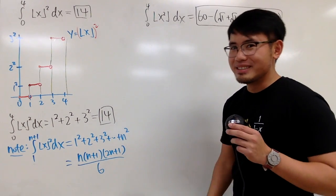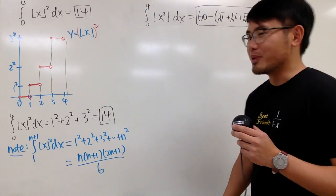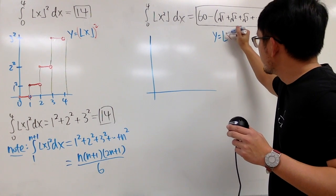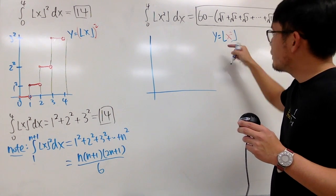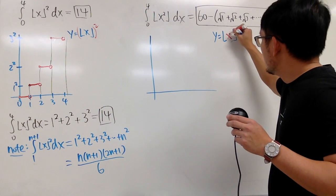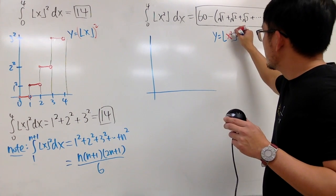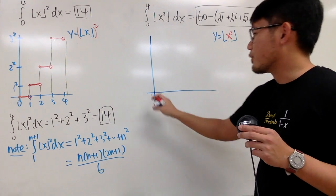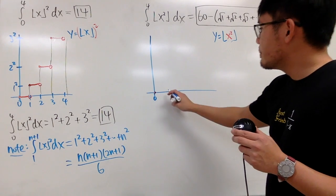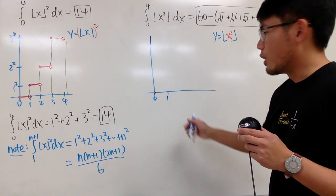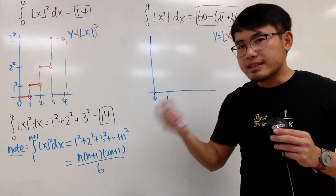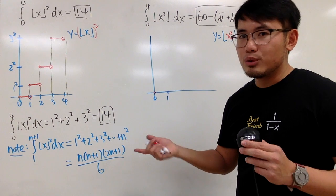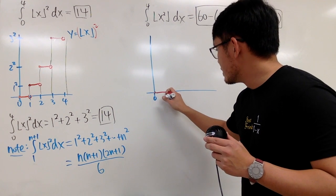Now let's talk about how we can tackle the second integral. I'll still use the graph. So let's come up with the graph for floor of x². Based on order of operations, we have to do x² first. When x is 0, 0 squared is 0, and the floor of 0 is still 0. And up to when x is 1, anything between 0 and 1 gives x² less than 1, and the floor of that is still 0. So this segment is flat again, with open and closed circles.